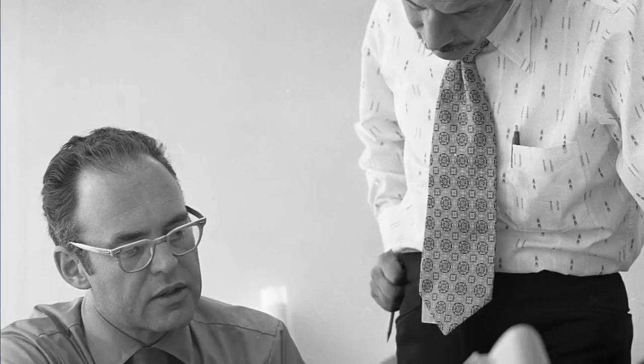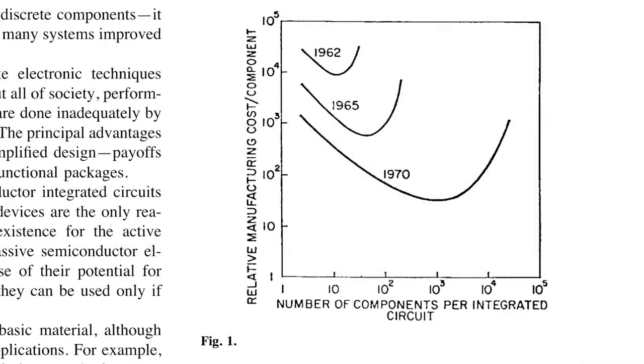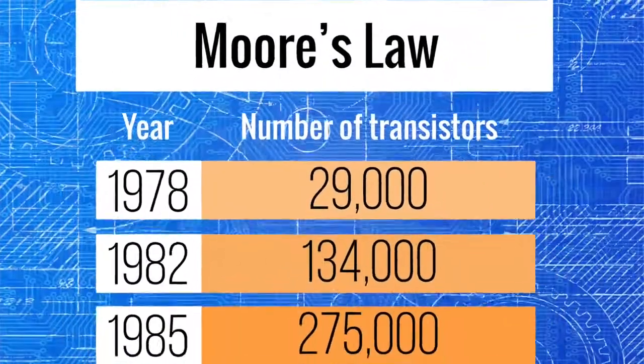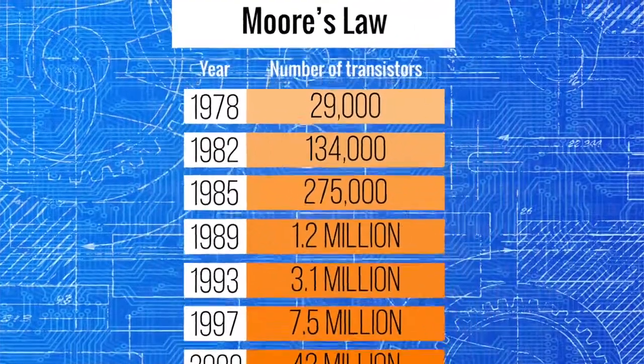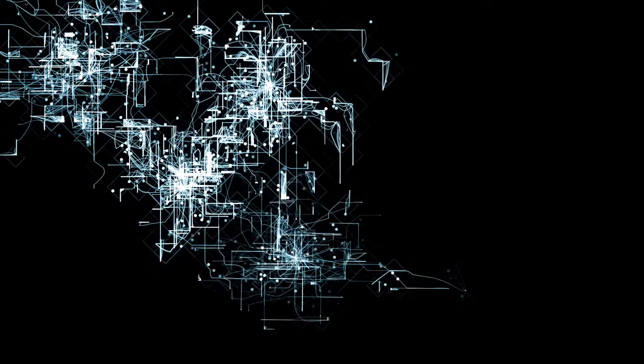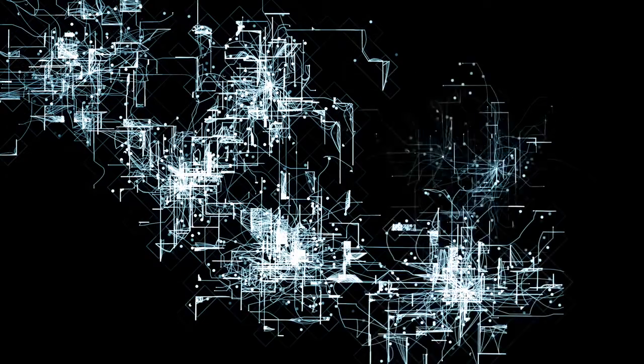In 1965, Gordon Moore made the prediction that the number of transistors per square inch on integrated circuits would double every 18 to 24 months. This prediction has come to be known as Moore's law and has roughly held true for the past half century. This law is important because every time the number of transistors doubles, their efficiency, reliability, performance, and cost also improve.